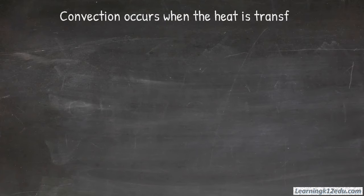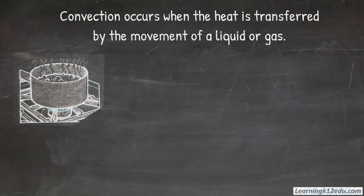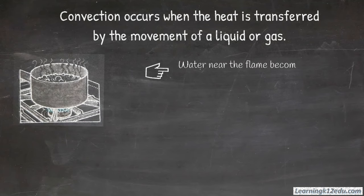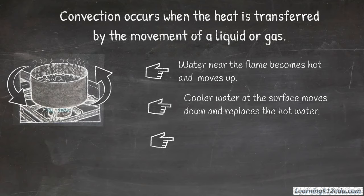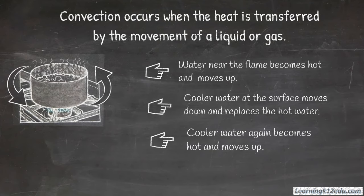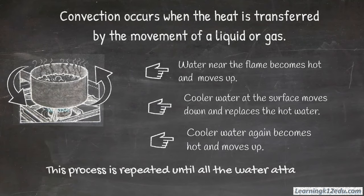Convection occurs when the heat is transferred by the movement of a liquid or gas. It happens in the following steps. Water near the flame becomes hot and moves up. Cooler water at the surface moves down and replaces the hot water. Cooler water again becomes hot and moves up. This process is repeated until all the water attains the same temperature.